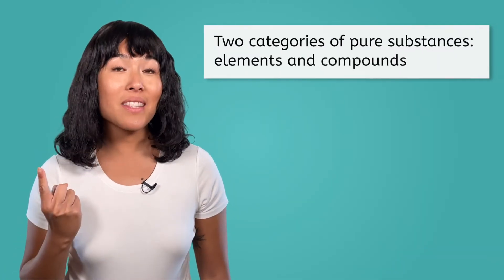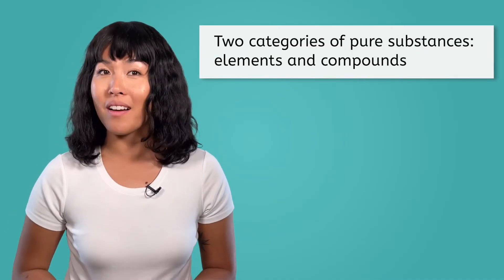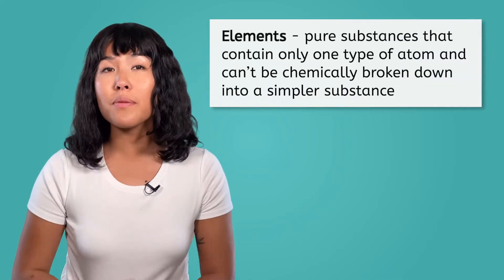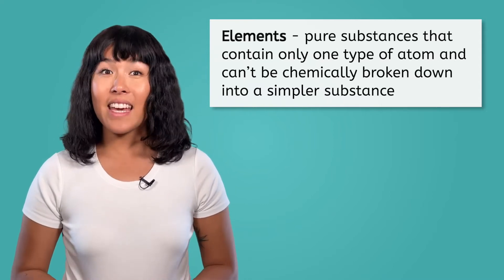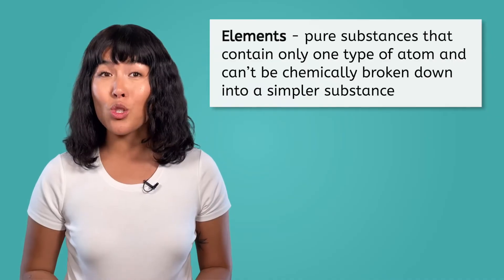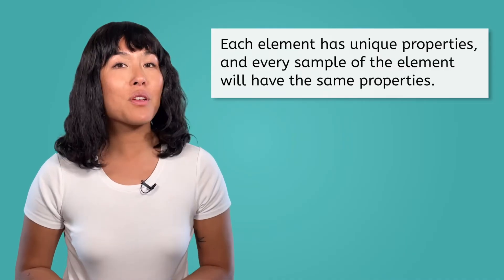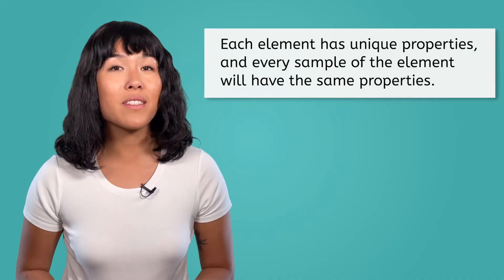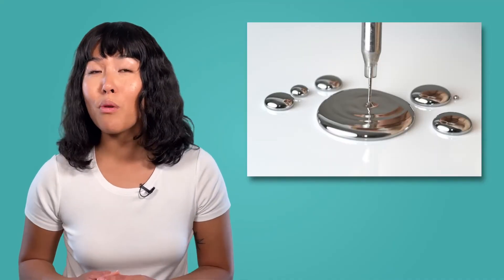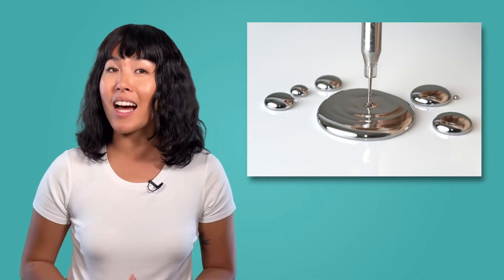There are two categories of pure substances: elements and compounds. We spent time in a previous unit discussing elements and the periodic table. Elements are pure substances that contain only one type of atom and they can't be chemically broken down into a simpler substance. Each element has unique properties and every sample of the same element will have the same properties. For example, the density of mercury is 13.5 grams per milliliter, and this density remains unchanged no matter the size of the sample.